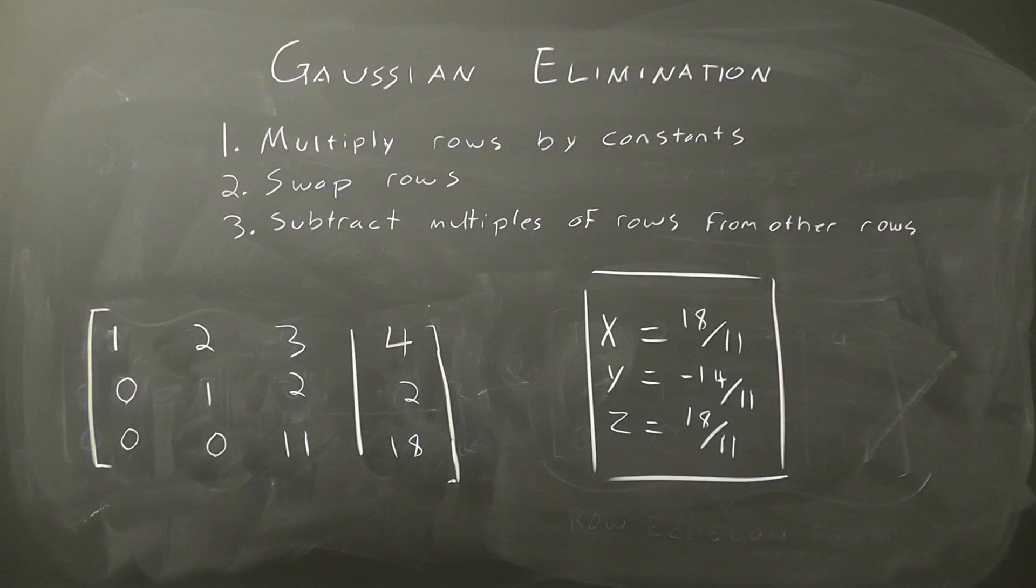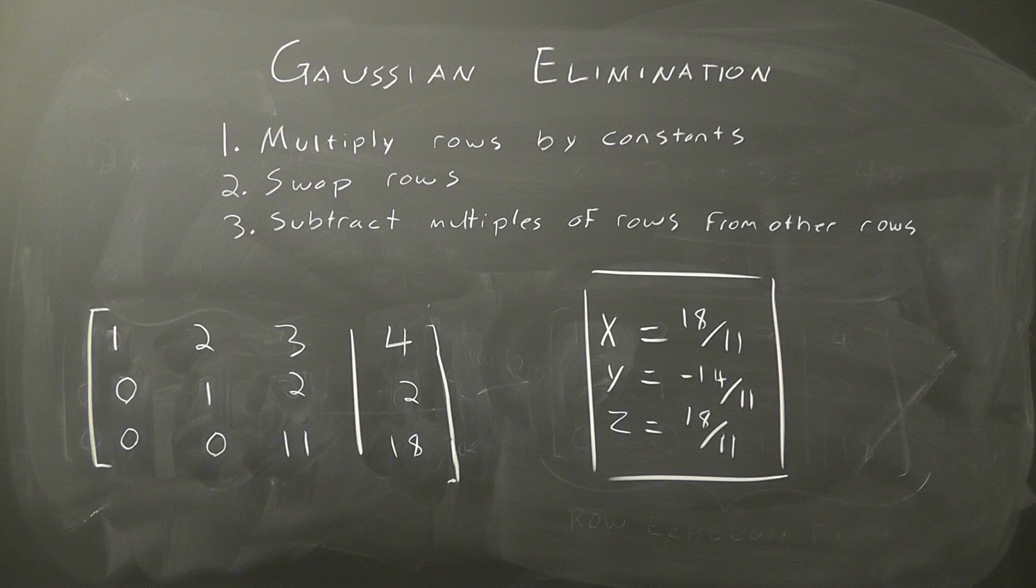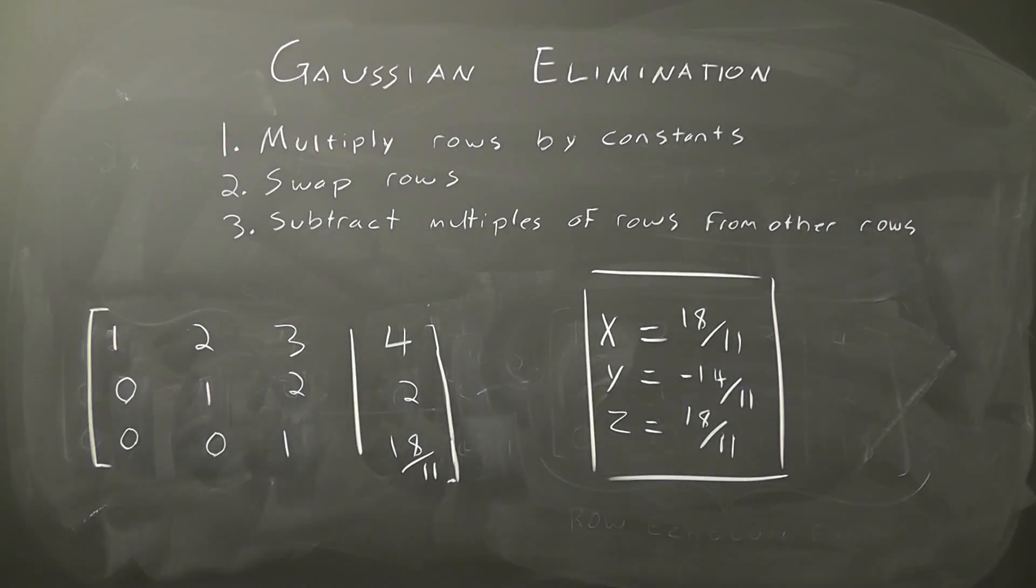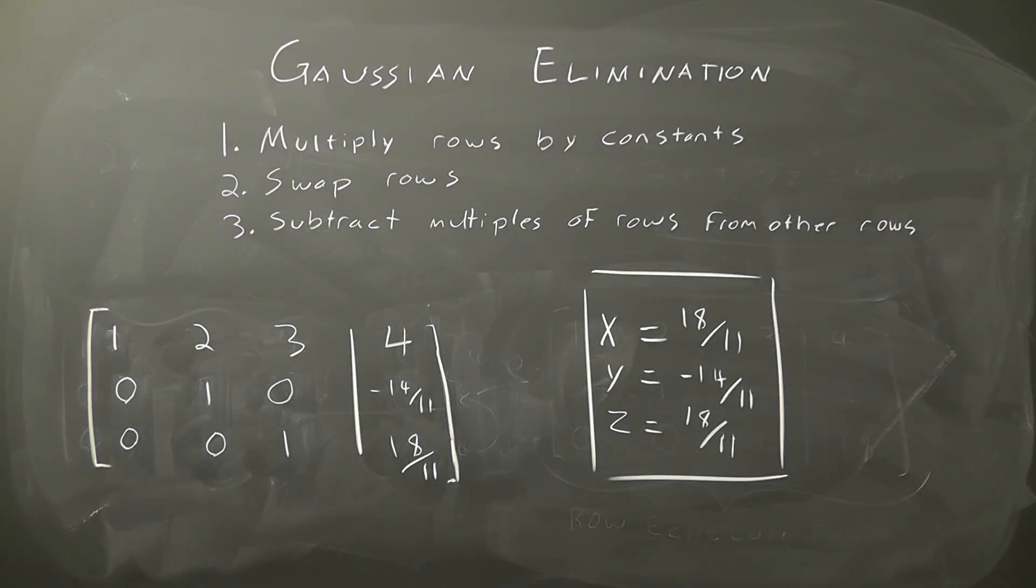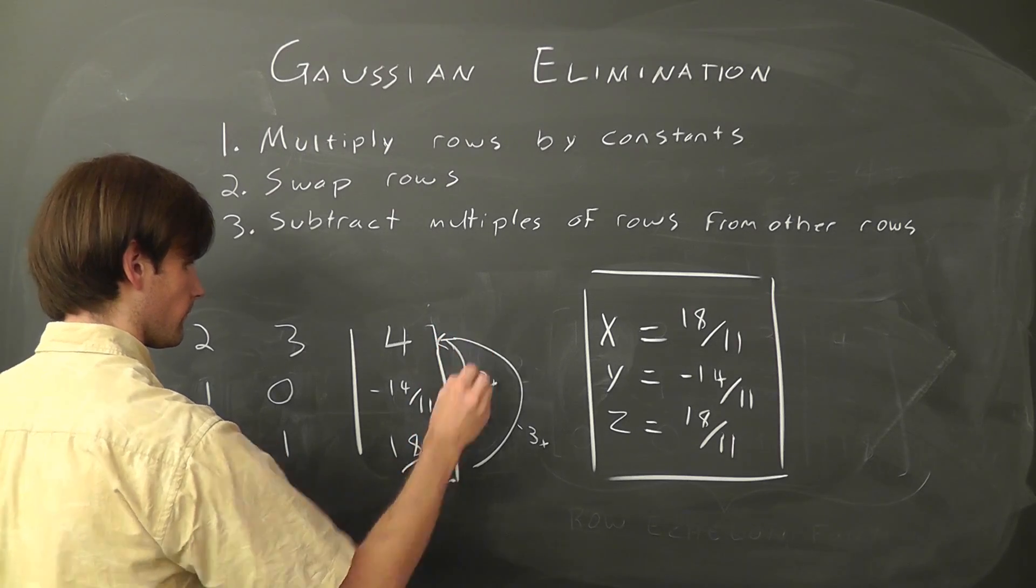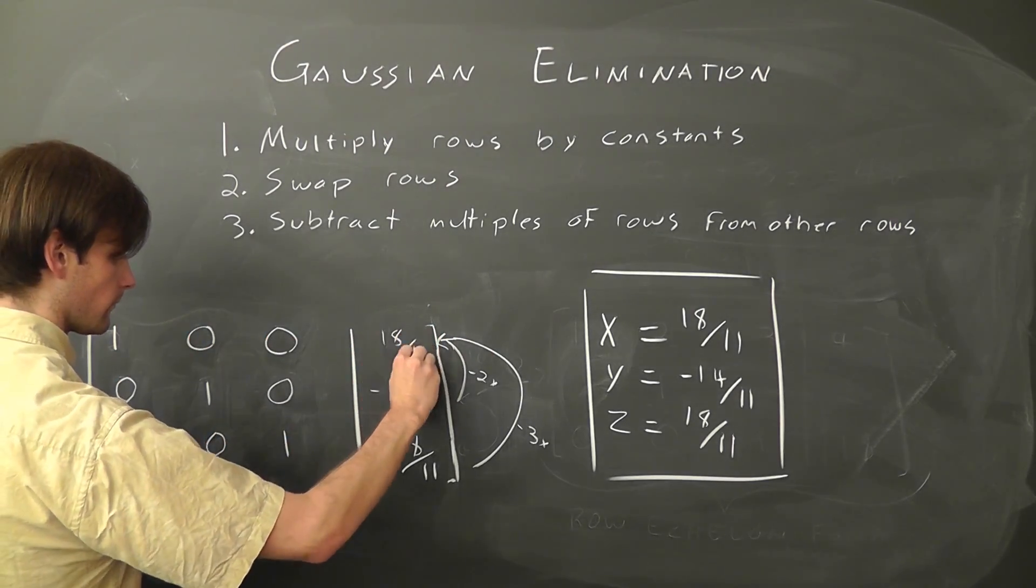That said, we can actually take this one step further by reducing our matrix such that only the diagonal elements are non-zero by using the exact same rules we used before. In this case, we might start by dividing the third row by 11, and then subtracting two times the third row from the second row. Then we just subtract three times the bottom row from the top row and two times the middle row from the top row, creating what essentially looks like the identity matrix with fractions on the side.